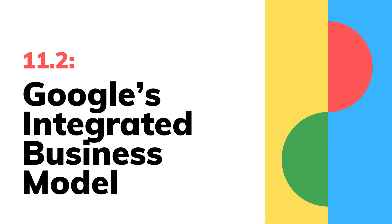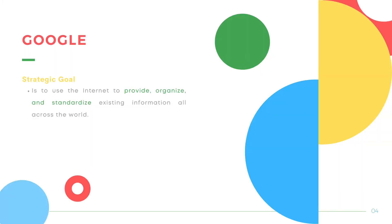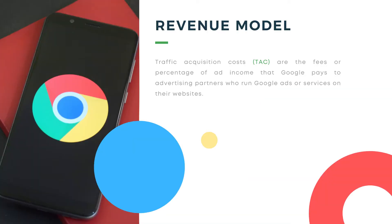Now we'll tackle Google's integrated business model. Google's strategic goal is to use the internet to provide, organize, and standardize existing information across the world. For the revenue model, the AdSense Partner Program displays content-dependent advertising on external websites, creating one of the most important revenue streams. When a user clicks on an advertisement, the website owner receives a set amount of compensation. Google receives increasing traffic from the partner website at the same time. Traffic Acquisition Costs, or TAC, are the fees or percentage of ad income that Google pays to advertising partners who run Google Ads or services on their websites.